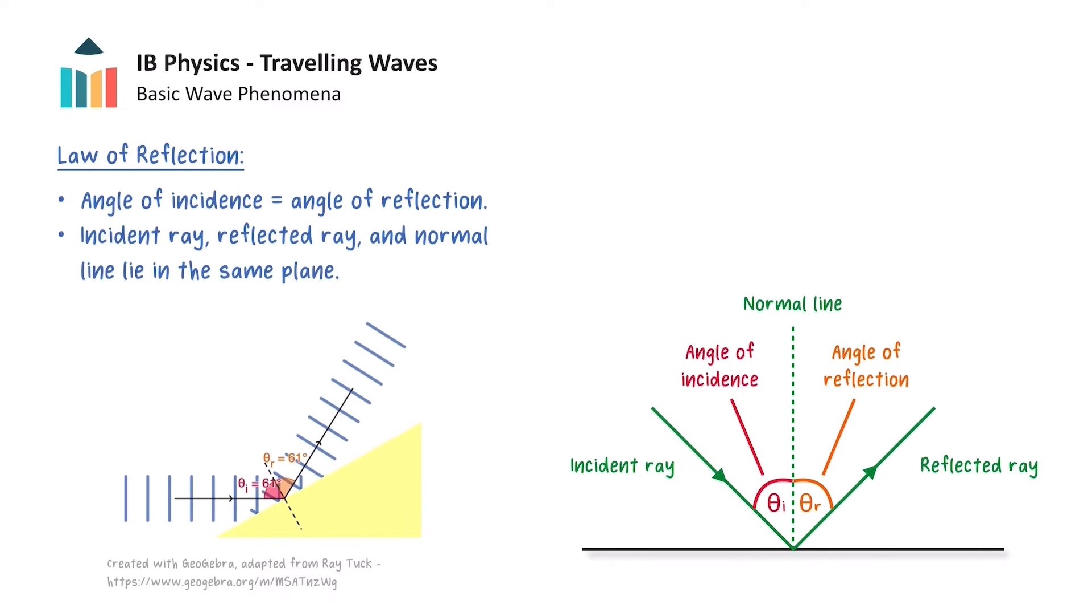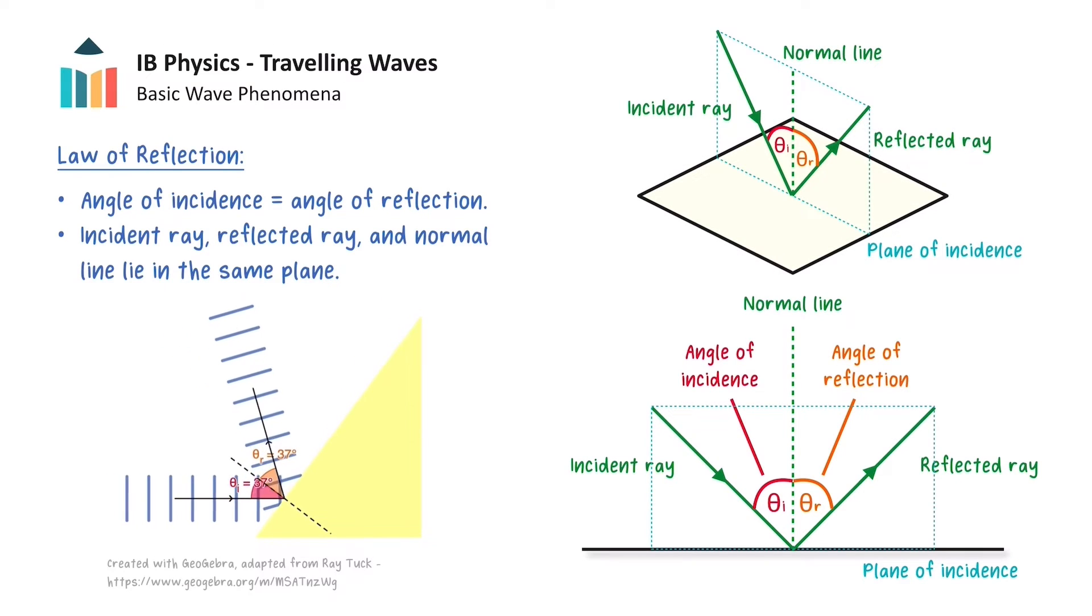The second part of the law of reflection states that the incident and reflected rays and the normal line lie on the same plane called the plane of incidence. We can take this two-dimensional figure and rotate it into three dimensions, to leave us with this image which more clearly shows the rays and normal line in the same plane.